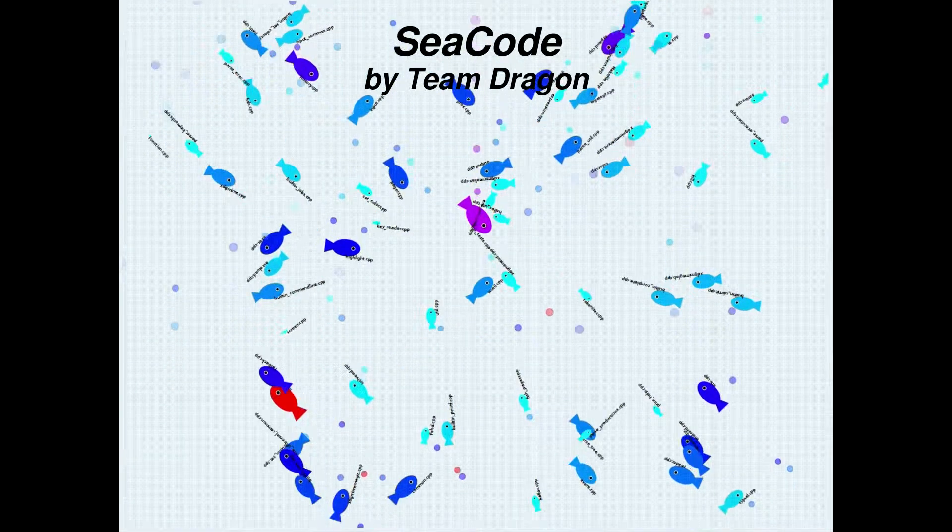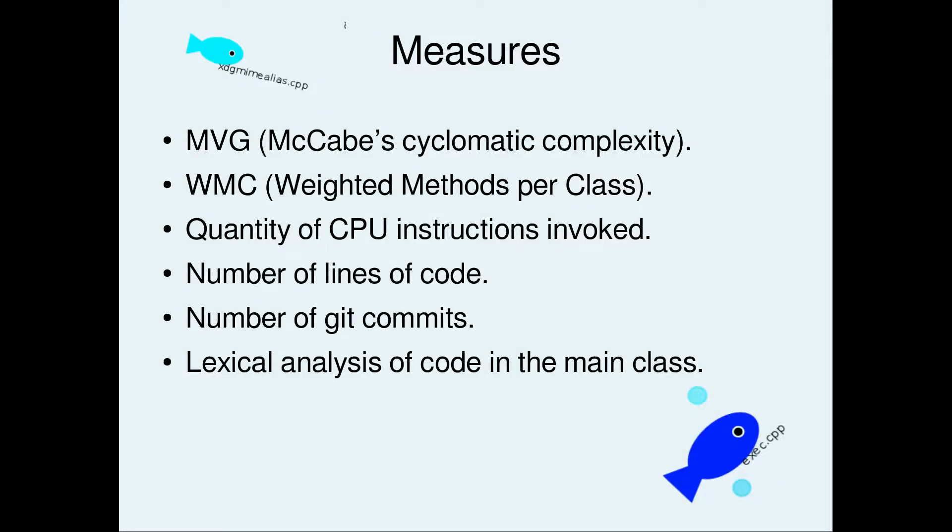For each C++ source file, we will be interpreting the following metrics: McCabe's Cyclomatic Complexity, which measures the number of linearly independent paths in a source file, and Weighted Methods per Class, which denotes the amount of effort needed to develop and maintain a class.